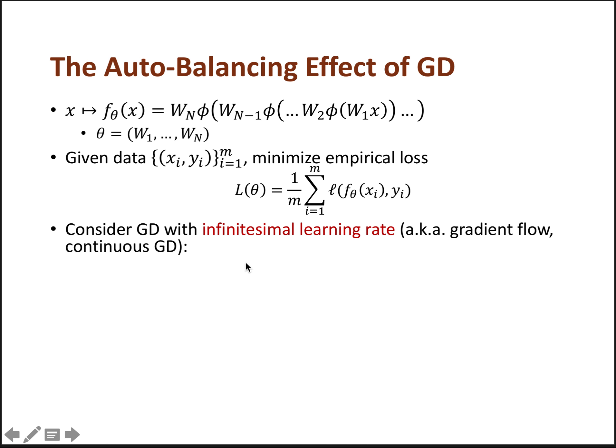And we consider the standard setting of minimizing the empirical loss given data using some arbitrary loss function. And the algorithm we consider is gradient descent with infinitesimal learning rate, aka gradient flow or continuous gradient descent. This is modeled by a differential equation where the variable theta is changing continuously over time, and its derivative with respect to time is equal to the negative gradient of the loss. So this is a standard and idealized model for gradient descent with very small learning rates.